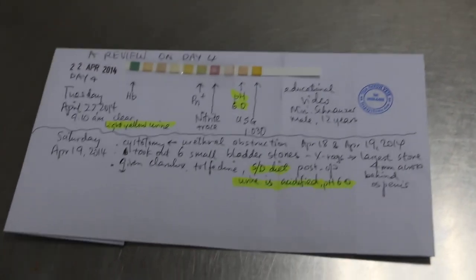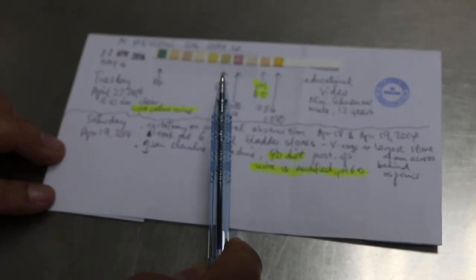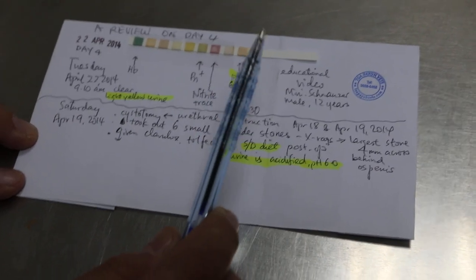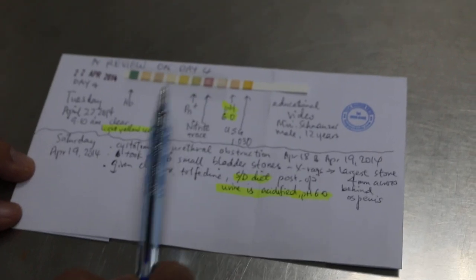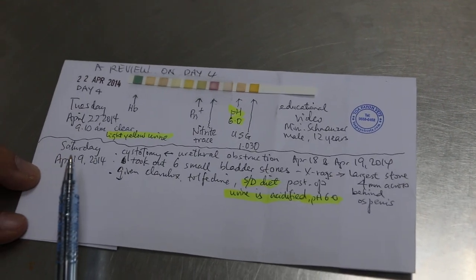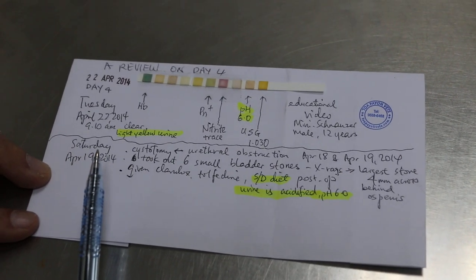22nd April, a review on day 4. The management of these urinary stones in the dog is best achieved by reviewing the urine after the treatment, after the surgery.